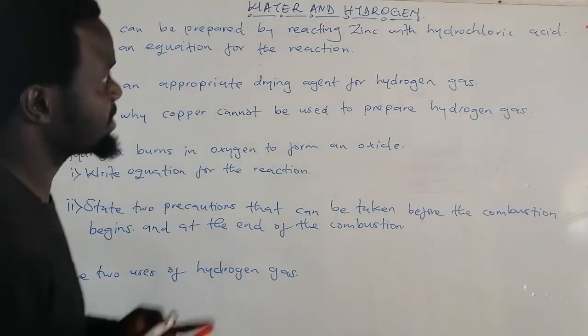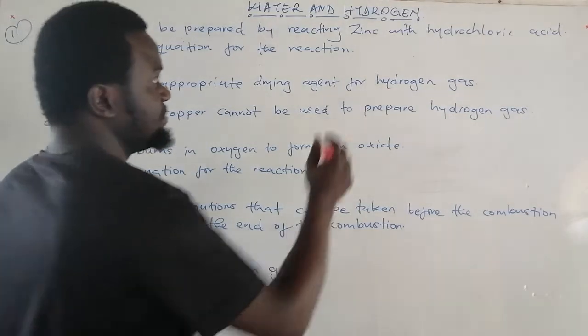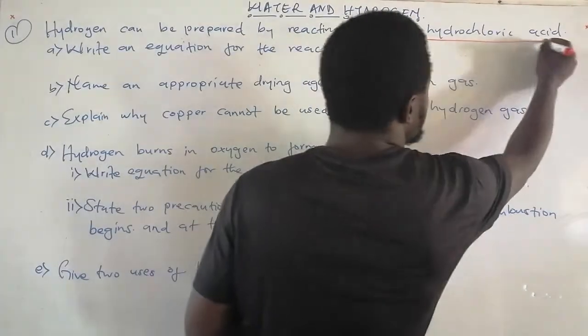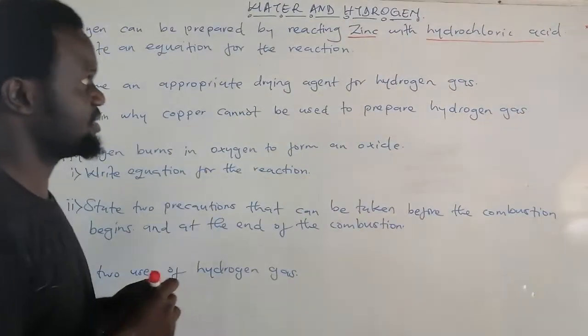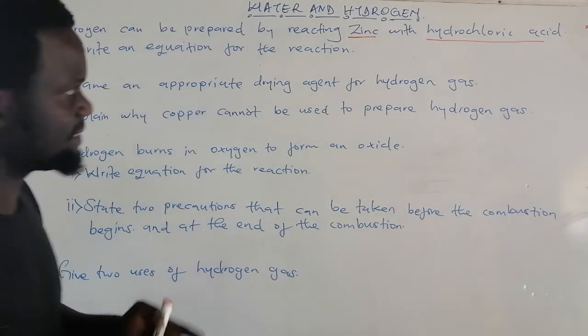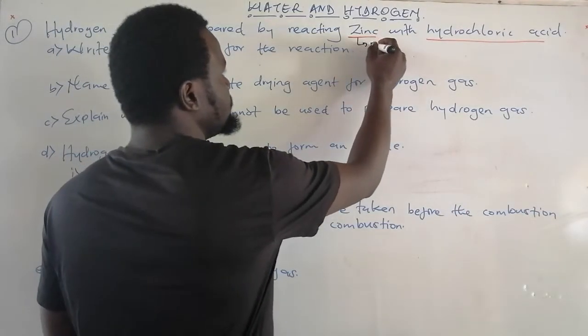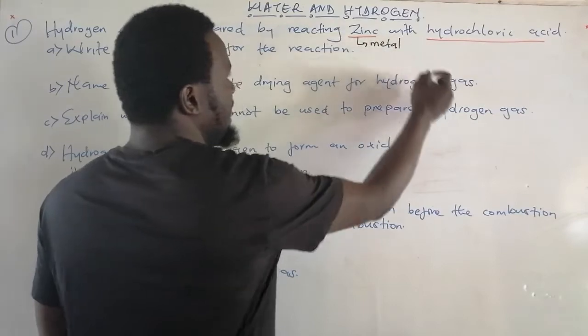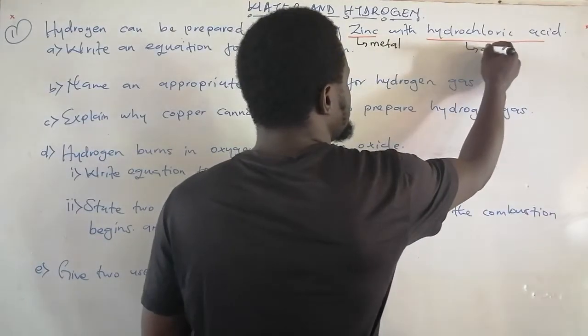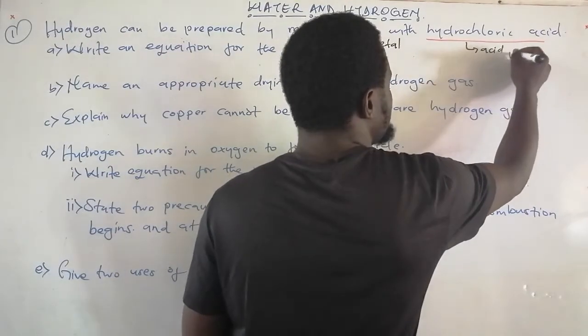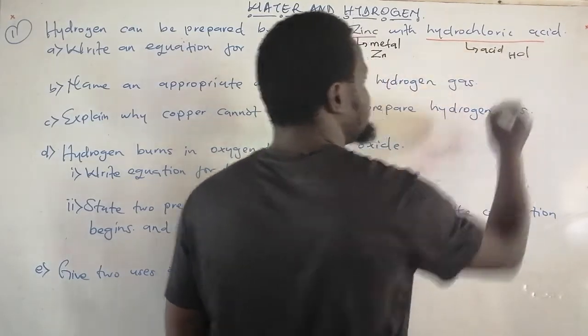There is something I'd like us to identify — two things: zinc and hydrochloric acid. Zinc itself is a metal. Hydrochloric acid is an acid. Zinc, the formula, is Zn. Hydrochloric acid, the formula, is HCl.